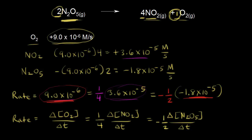Now that we've figured out how to express our rate, we can look at the balanced equation and see the pattern. For dinitrogen pentoxide, the stoichiometric coefficient was 2, and notice the 2 appears in the denominator of the rate expression. For nitrogen dioxide, the coefficient was 4, so 4 goes in the denominator. For oxygen, the coefficient was 1, so we could write one over one — just to show the pattern of how coefficients from the balanced equation are used to express the rate.